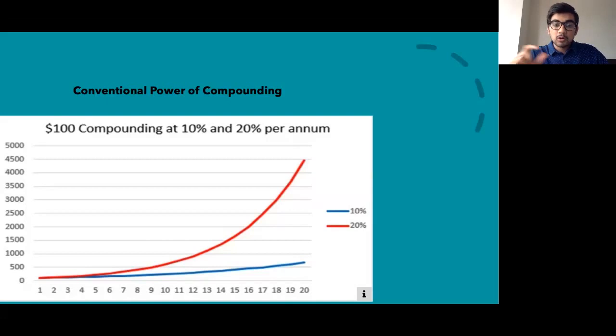And secondly, how small changes in the rate can make such a big difference. So if we go from 10% to 20%, the compounding goes from 500 to 4,500. So a 10% increase in the rate ensures a nine times return, right? From 500 to 4,500. And of course, the longer you give time, the more time you give to compound, the better it compounds.